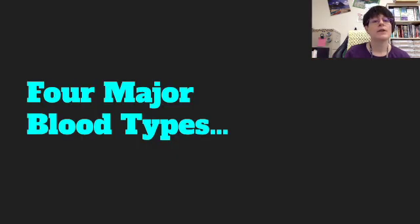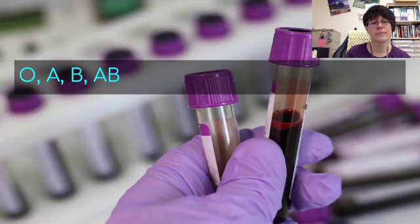There are four major blood types. Perhaps you know your blood type. The four major blood types are O, A, B, and AB.